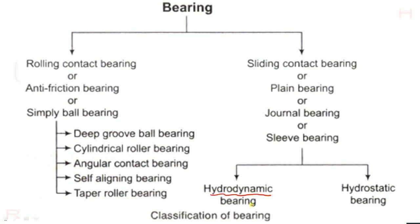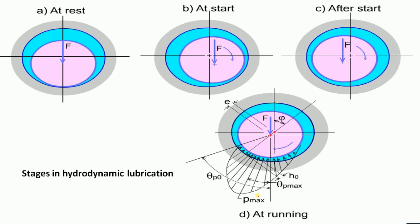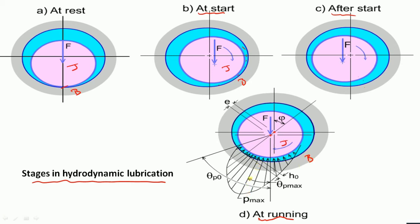Next we have the hydrodynamic bearing. In hydrodynamic lubrication there are several stages: at rest, the journal and bearing are in solid contact. At start, an oil film begins to develop between the journal and bearing. As speed increases, the oil film grows, and at running speed the oil film produces a clearance between journal and bearing. This oil film pressure at running speed characterizes the hydrodynamic bearing.